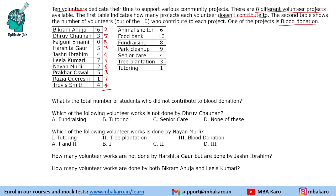So the total contribution is 7 plus 8 equals 15, then 18, 22, 23, 29, 32, 39 and 43. So the total contribution is 43.